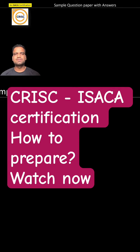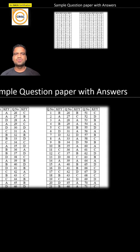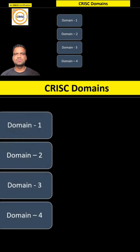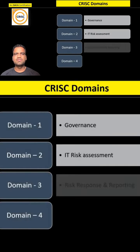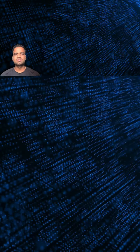At the end of the book we have a sample question paper with answer key and glossary. Make sure you go through all the glossary at least once. Domain one is boring, so you can switch between domain four and the glossary when you find you're not putting more energy into domain one.